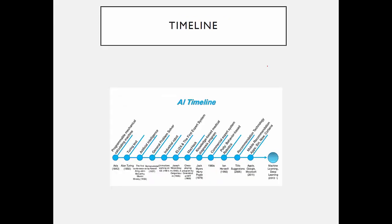Looking at the timeline, we saw the Turing test, then the Chinese room experiment, then the coining of the term artificial intelligence, followed by ELIZA — a program made in the MIT AI lab — and things kept evolving. We also talked about artificial neural networks, fuzzy logic, and genetic algorithms, all discussed in this field. In current times, we see machine learning and deep learning being discussed alongside artificial intelligence.